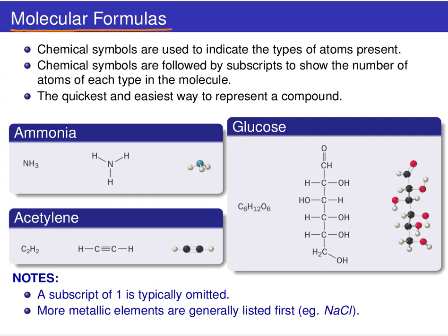So a molecular formula represents a compound by using the chemical symbols you get off the periodic table to indicate the types of atoms that are present. And then we put a subscript on every chemical symbol to show the number of atoms of that particular element.